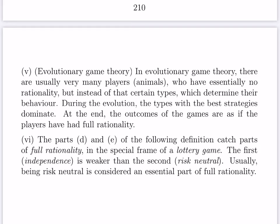There is a branch of game theory called evolutionary game theory, with implications in biology. In this branch one has very many players — animals — with essentially no rationality at all. Instead, they have certain types determined by their genes which determine their behavior. During evolution, the types with the best strategies dominate and survive, and at the end the outcome is as if the players had full rationality — nature takes care that the best strategies survive.